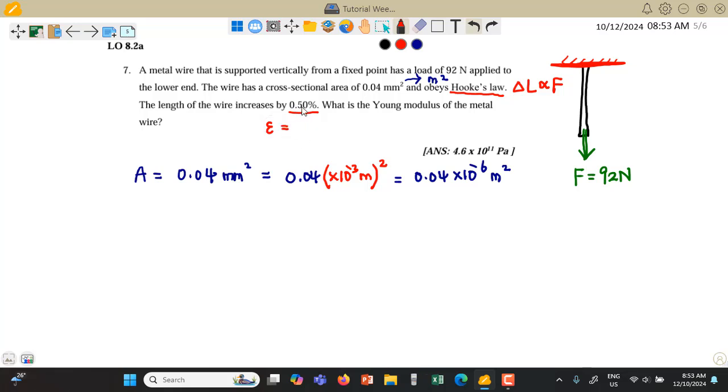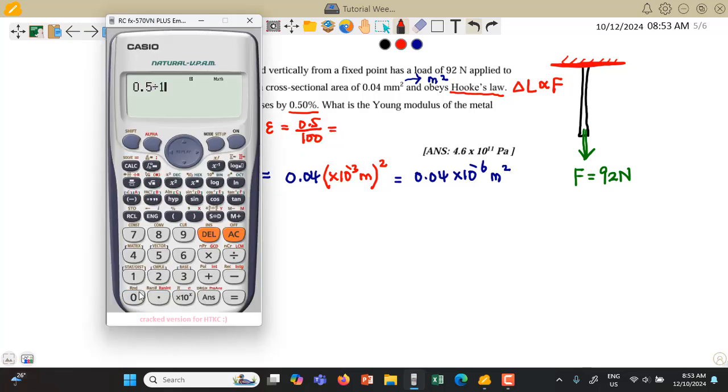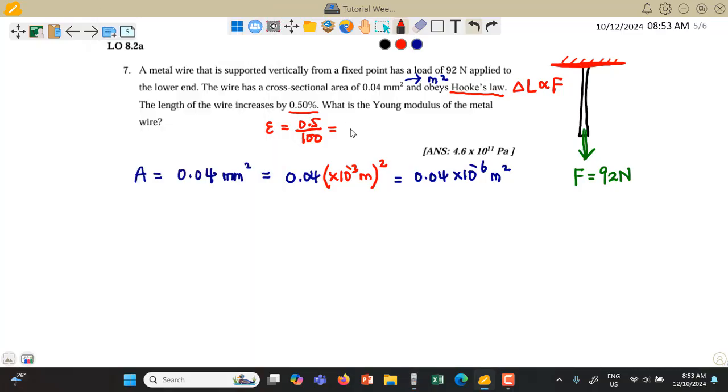This 0.5% actually is referred to the strain experienced by the wire. The strain is given by 0.5%. We write it in numbers. It will be 0.5 over 100, so we will get 5 times 10 to the power of negative 3.